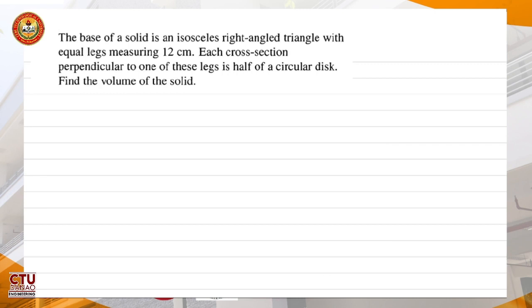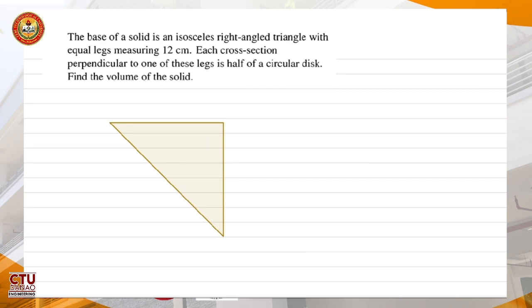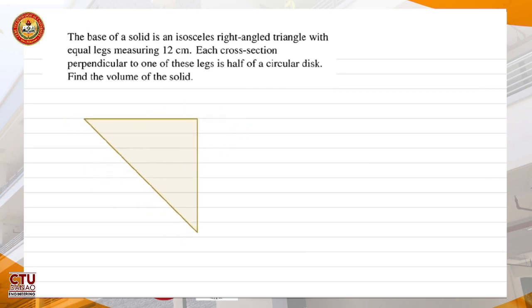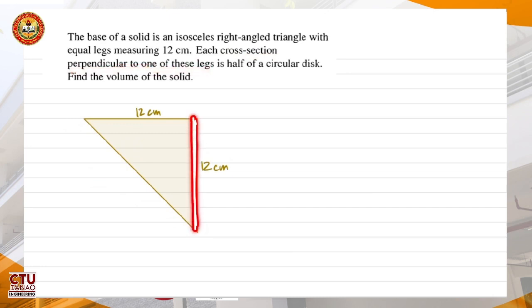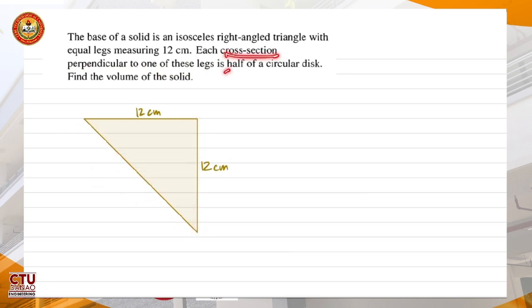Let us first illustrate what is described. The base of the solid is a right-angled triangle. Each equal side is 12 centimeters — this is 12 centimeters and this is 12 centimeters. Each cross-section perpendicular to one of these legs — let's say this leg, perpendicular to this leg — each cross-section is half of a circular disc.